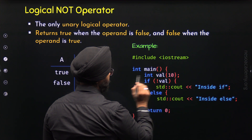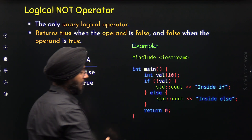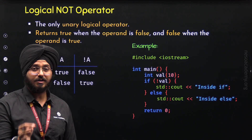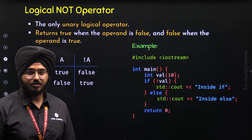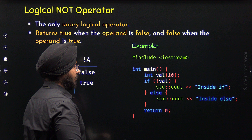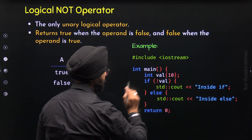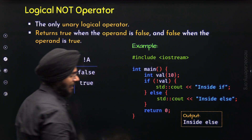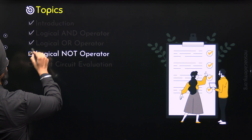Let's take an example. I am checking the condition NOT val. The value of the variable is 10, so we have NOT of 10. A non-zero value is treated as true, and 0 is treated as false. Since 10 is a non-zero value, it is treated as true, and NOT of true is false. So we get false as the result — the else-block executes again, and we get 'inside else' as the output.